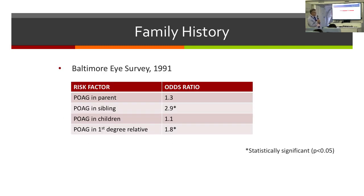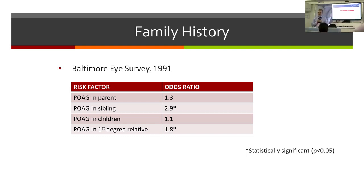Looking at odds ratios: if there is primary open-angle glaucoma in a parent, the odds ratio is about 1.3 — that is, 1.3 times higher than if you didn't have a parent with glaucoma. If you have primary open-angle glaucoma in a sibling, the risk is three times greater. And if you have a first-degree relative with glaucoma, the odds ratio is almost two times.